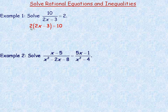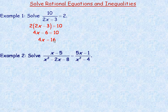What I would do next is expand out the left side. 2 times 2x minus 3 is 4x minus 6 — don't forget to multiply the 2 by that 3. Adding 6 to both sides gives 4x equals 16, and dividing by 4 gives x equals 4.